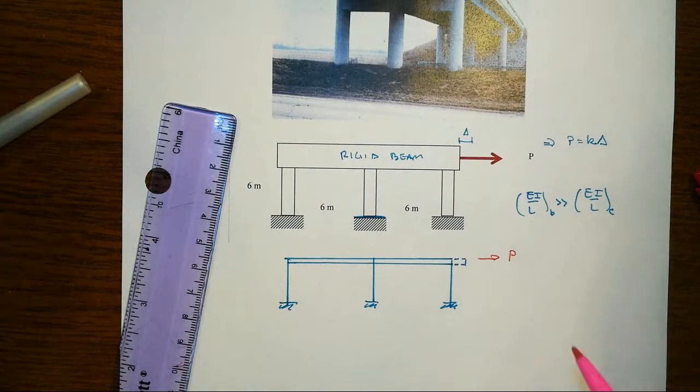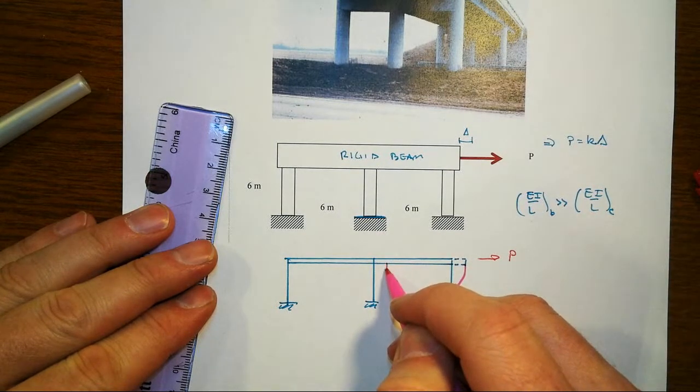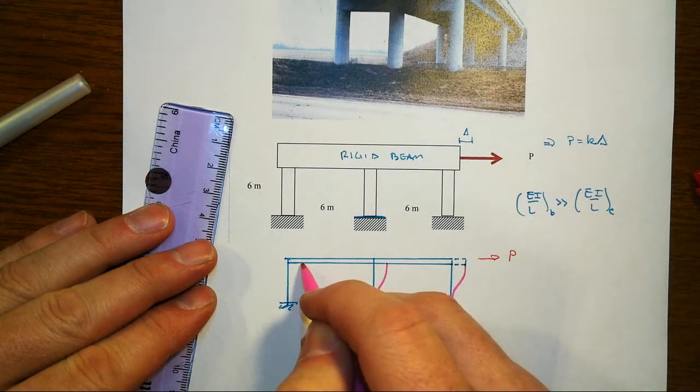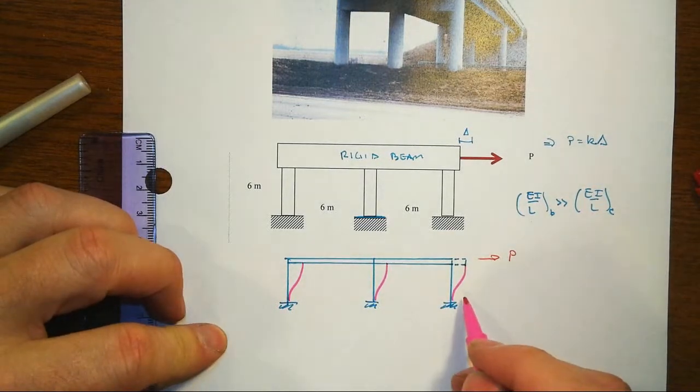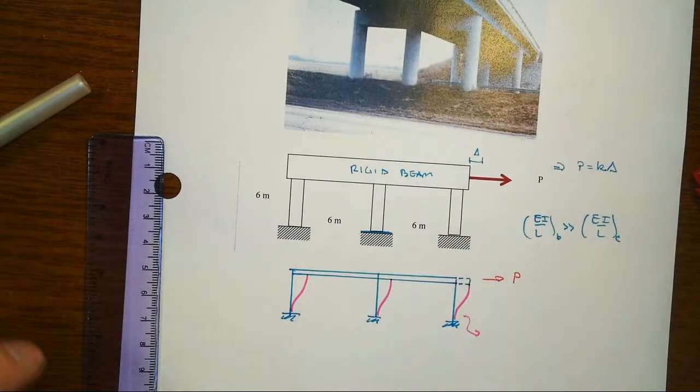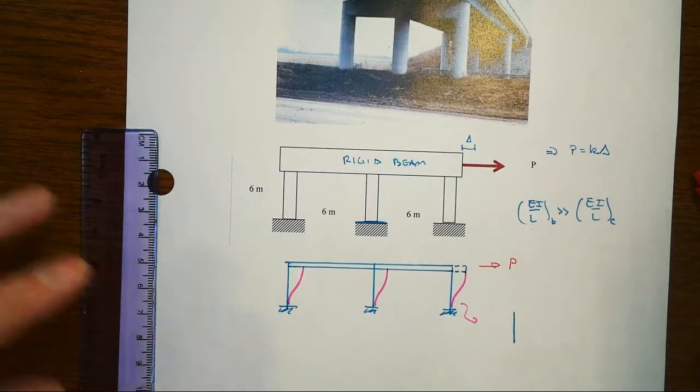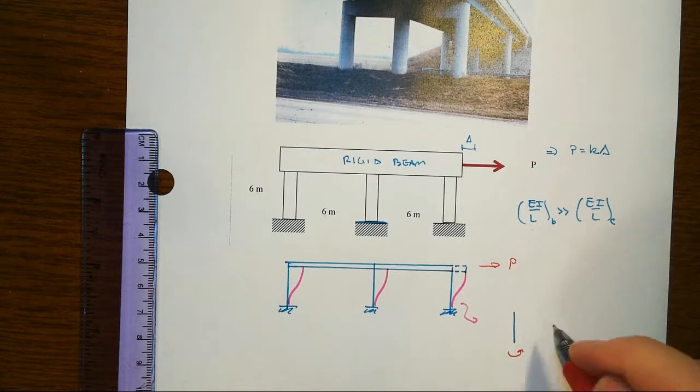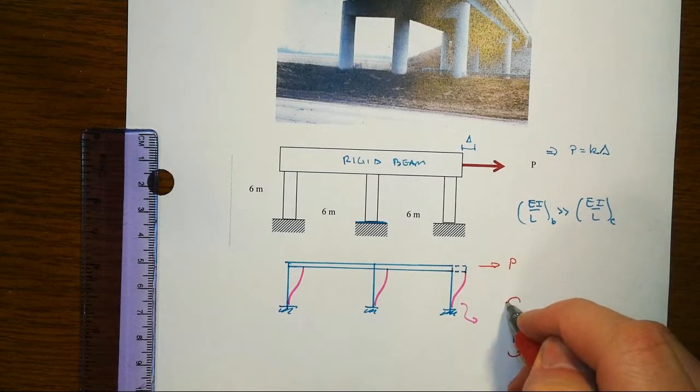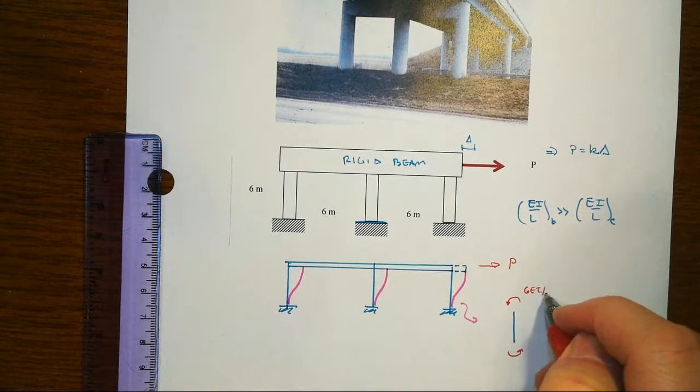And that tells us then that each one of these columns, as a little free body diagram, is going to end up with, of course, the bending moments that we could get from a slope deflection model. And that would be 6EI over L squared times delta on either end.